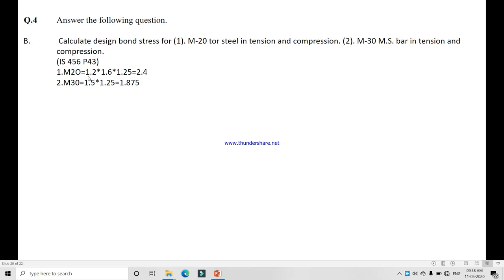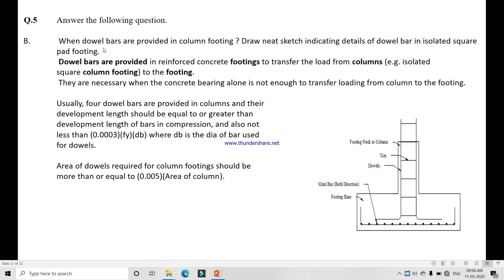For M30, this is 1.5 tau bd value, and this is MS bar so we no need to multiply with 1.6, and for compression we multiply 1.25, you get 1.875 megapascals.